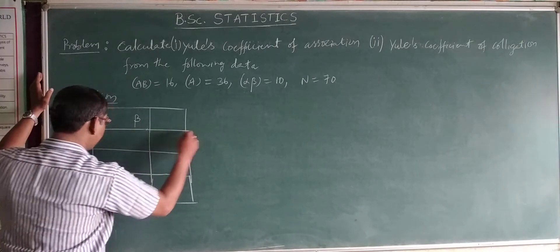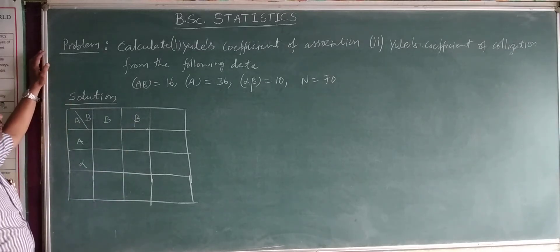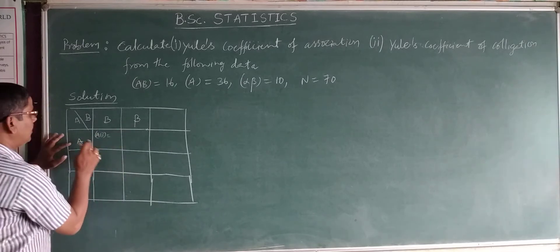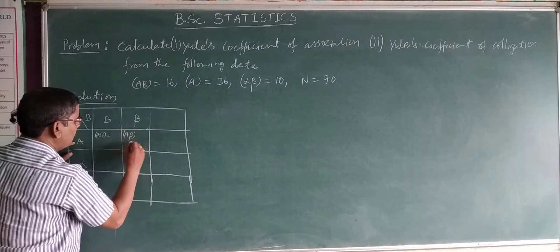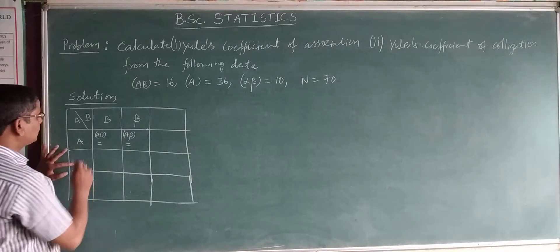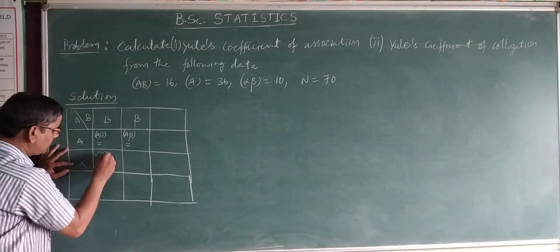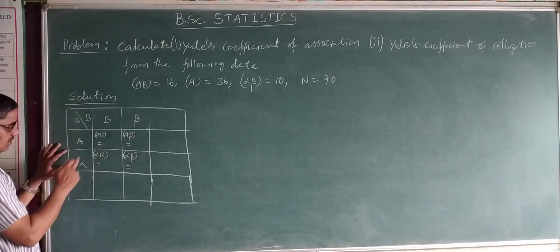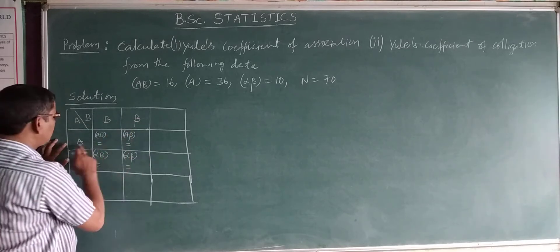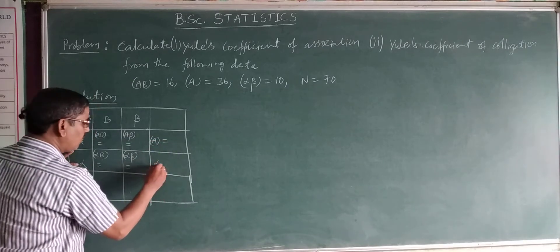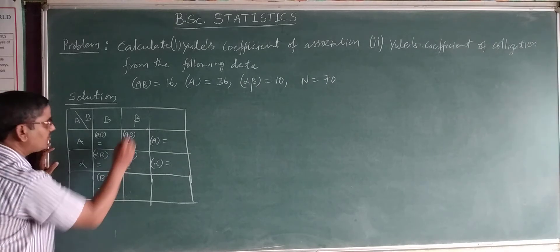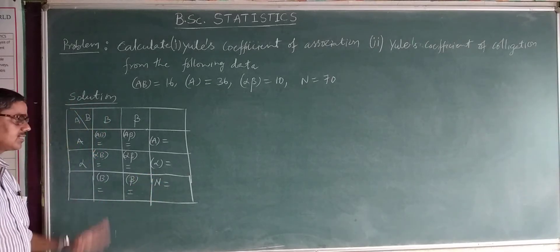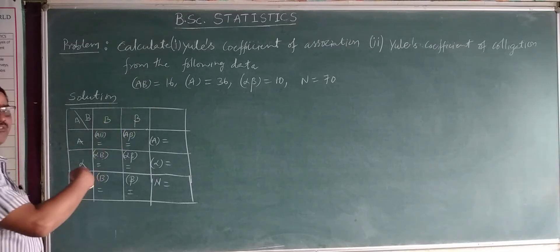This is the calculation of the remaining class frequencies. ab is given. Frequency of ab is this one; frequency of a-beta is this one; frequency of alpha-b is this one; frequency of alpha-beta is this one. If you add the two row entries, you get the marginal frequency of a and frequency of alpha. If you add the two column entries, you get frequency of b and frequency of beta. This is capital N. This is the table you need to understand. With the help of the given frequencies, we can calculate the remaining.